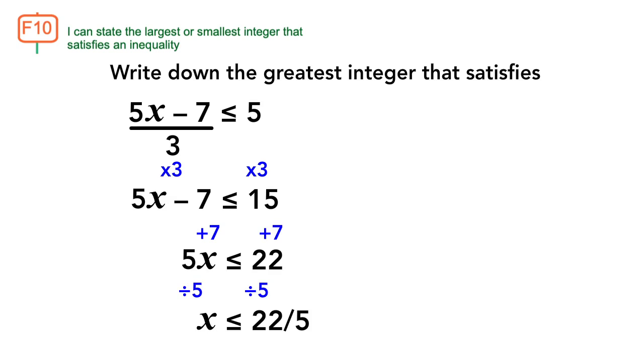We get 22 over 5, which is 22 divided by 5, which equals to 4.4. However, 4.4 isn't an integer. The first largest integer that satisfies the inequality is 4.